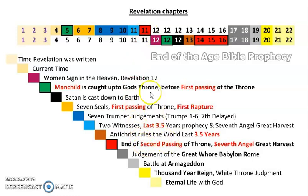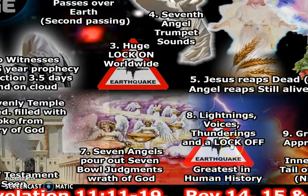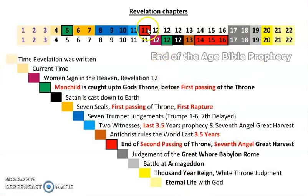At the end of the two witnesses, the seventh angel sounds because the second passing of the throne happens when the two witnesses ascend. In that very hour there's a massive earthquake as the throne locks on for the second time. There are great voices in heaven saying, 'The kingdoms of the world have become the kingdoms of our Lord and of His Christ; they shall reign forever.' The throne locks off in Revelation 11 — you know it's locking off for the second time because there are voices, thunders, lightnings, a great earthquake, and it's followed by great hail as we pass through the inner tail. That's how you know it's the second passing, and all of that is mentioned in Revelation 11.